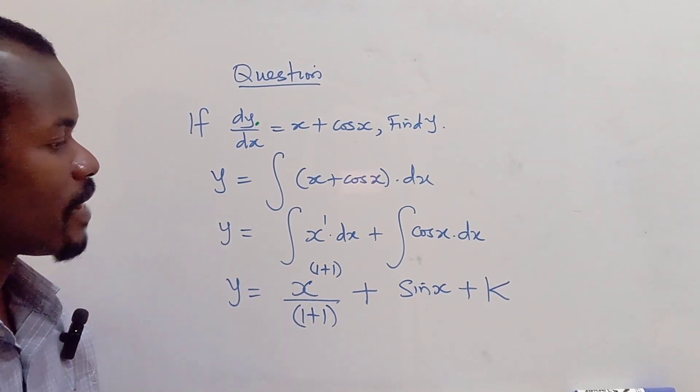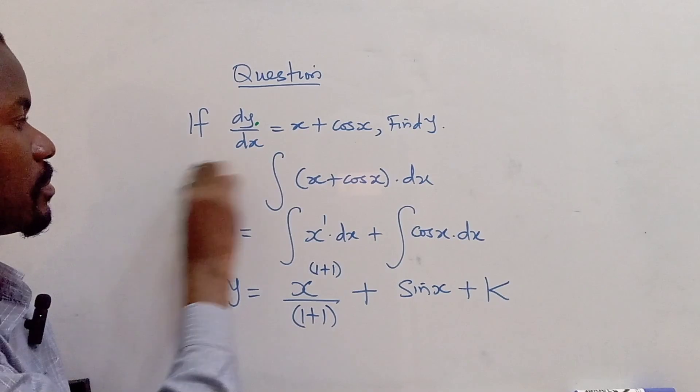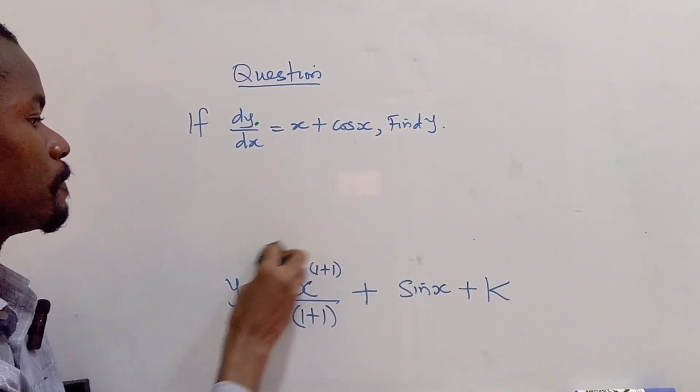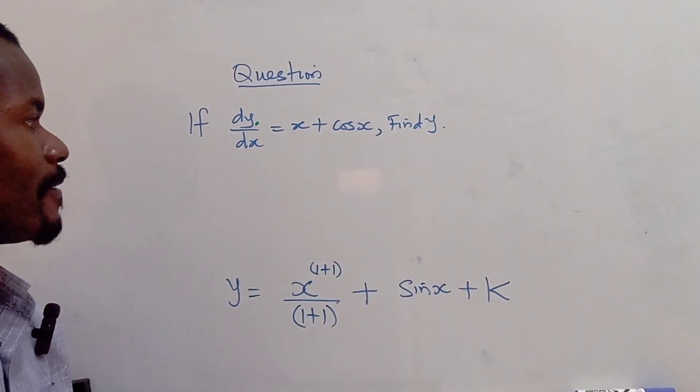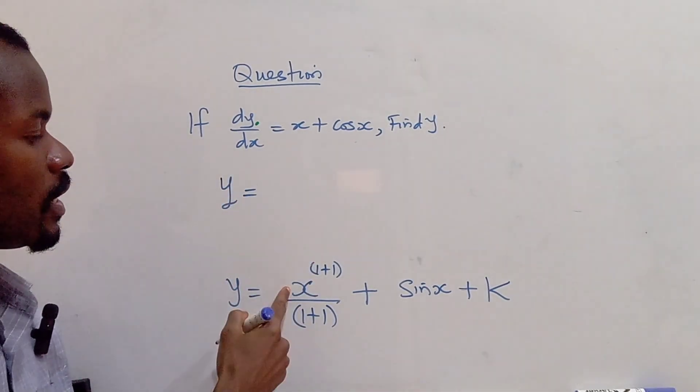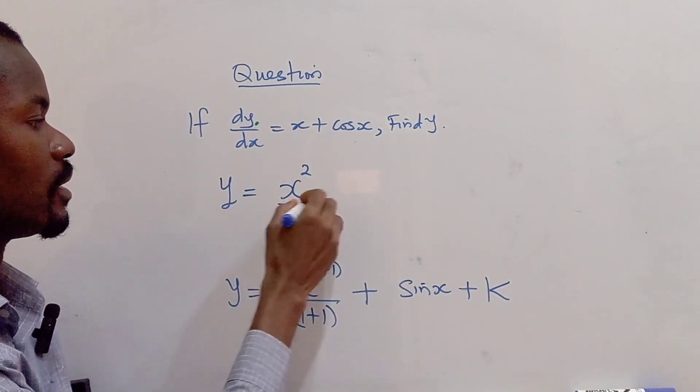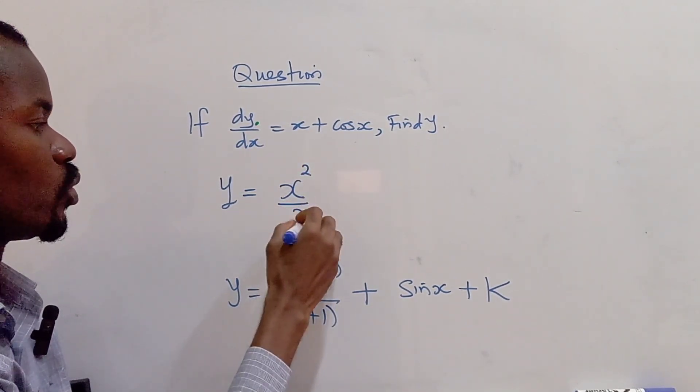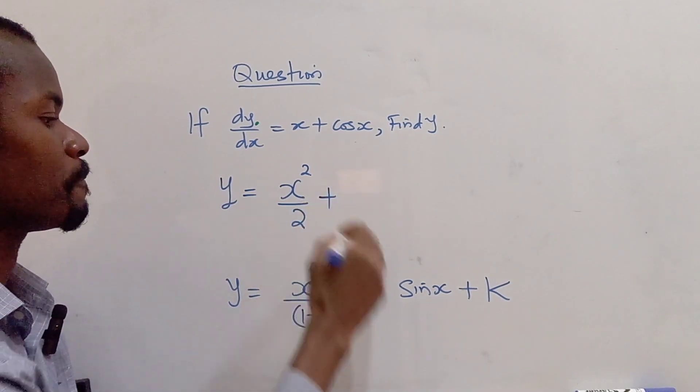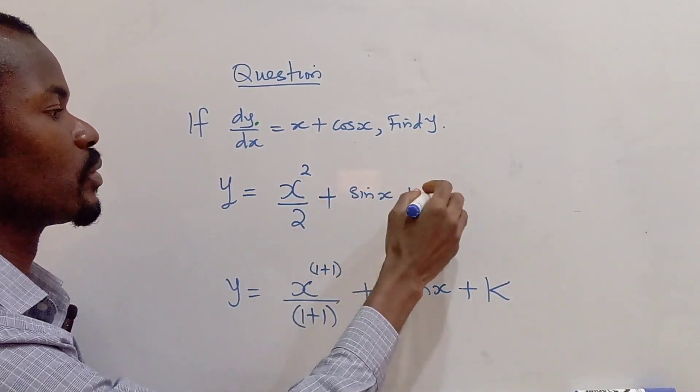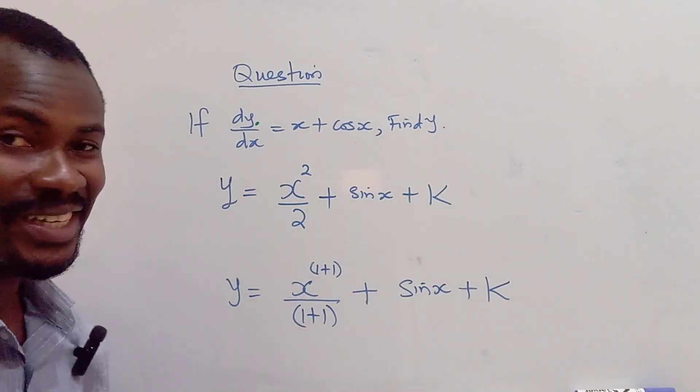So let's simplify this further and see what our answer becomes. So I have y equal to x raised to the power of 1 plus 1 is 2 divided by 1 plus 1 is 2 plus we have sine x plus k.